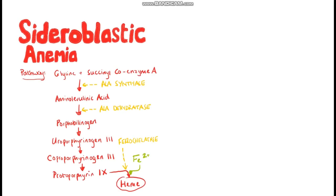Next is sideroblastic anemia — a form of anemia caused by some kind of abnormality in the heme synthesis pathway. In this case the body has iron, but something else has gone wrong. The heme synthesis pathway involves several enzymes, including aminolevulinic acid synthase and dehydratase. If there are problems with these enzymes, heme cannot be formed. This is exactly what happens in lead poisoning: lead inhibits aminolevulinic acid dehydratase and ferrochelatase.